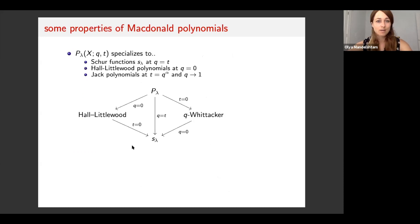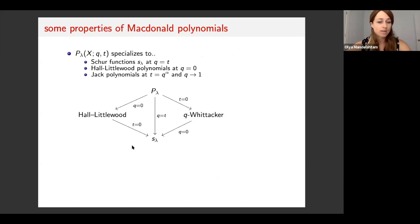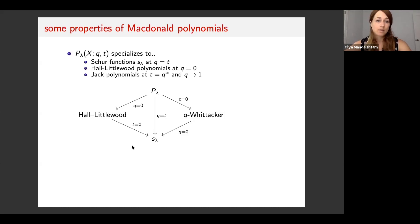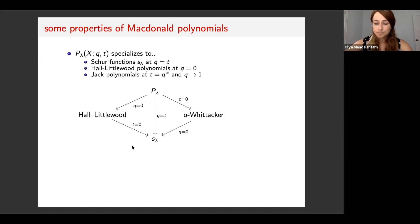Here are some important properties of Macdonald polynomials. Since their introduction, they have become a central object in algebraic combinatorics for several reasons. One of the reasons is that Macdonald polynomials specialize to many important polynomials that have already been playing a special role in representation theory, algebraic combinatorics, algebraic geometry, and other areas. For example, at q equals t, they specialize to Schur functions; at q equals zero, we get Hall-Littlewood; at t equals zero, we get q-Whittaker; and we also get Jack polynomials with a certain specialization.